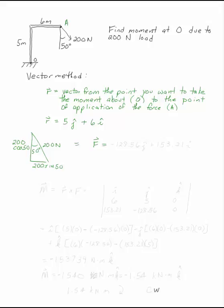Which gives you an F vector of minus 128.56j plus 153.21i.